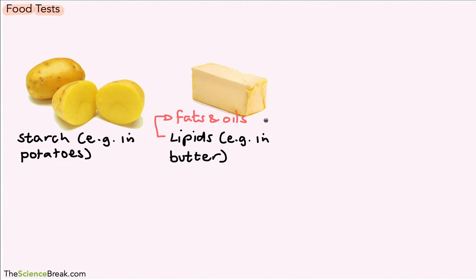This is a test for protein. The example I have is milk - there are other foods that contain protein, but milk is quite easy to test. The last test is for sugars.